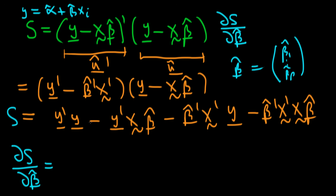It looks tricky, but we've covered everything we need. The first term, Y prime times Y, doesn't involve beta hat, so it contributes nothing — it just disappears when we differentiate with respect to beta hat.